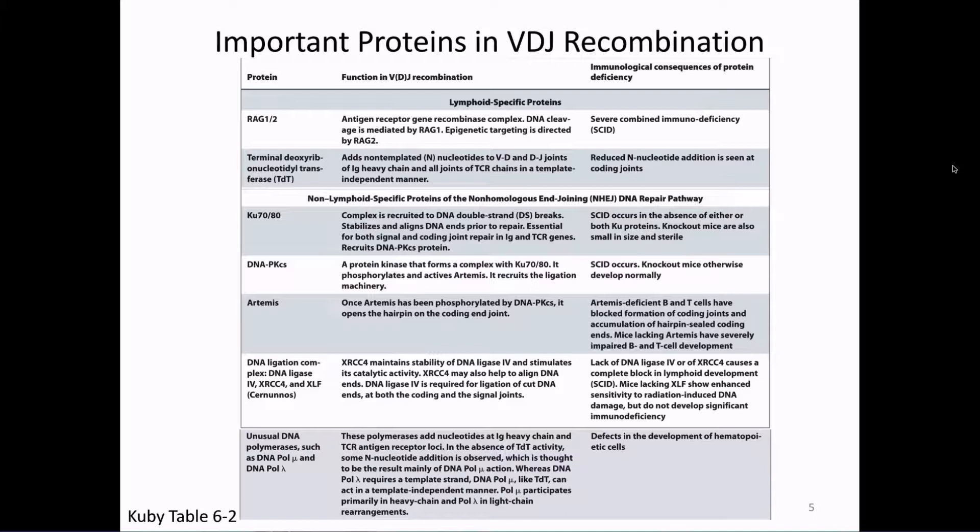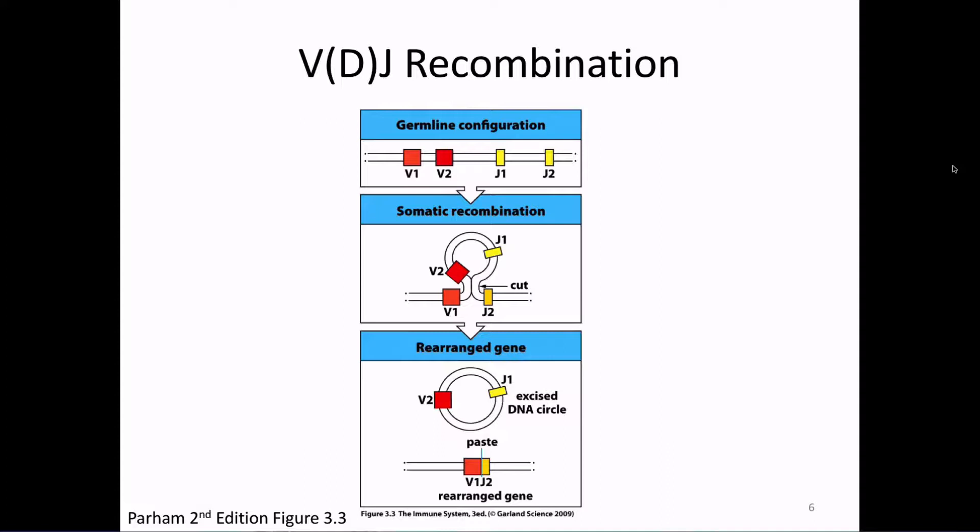At some point today I will mention RAG1 and RAG2, TDT, Artemis, Ku, DNAPK, and Ligase 4. These are the proteins you are going to see today as we go through the process of VDJ recombination in detail.